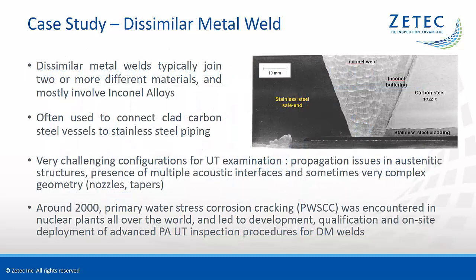The last case study is about inspection of dissimilar metal welds, or DM welds. These welds typically join two or more different materials and mostly involve Inconel alloys. They are often used to connect internally clad carbon steel vessels to stainless steel piping. Dissimilar metal welds are very challenging configurations for UT examination due to the various propagation issues in austenitic structures, the presence of multiple acoustic interfaces, and sometimes very complex geometry including conical nozzles and tapers.